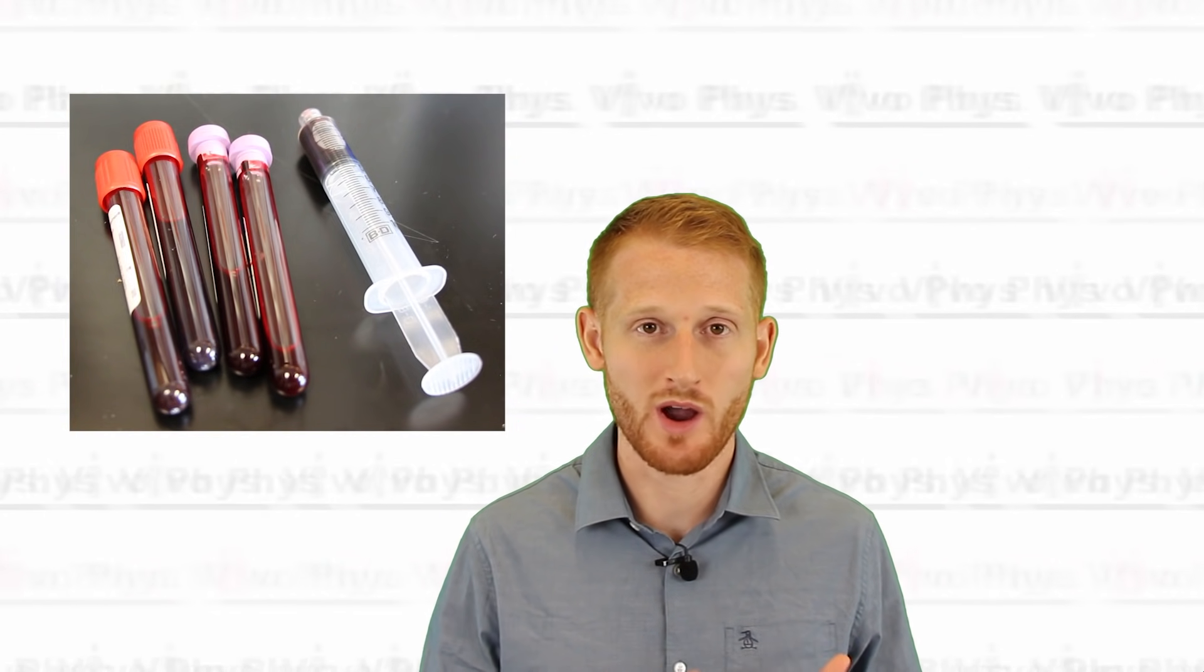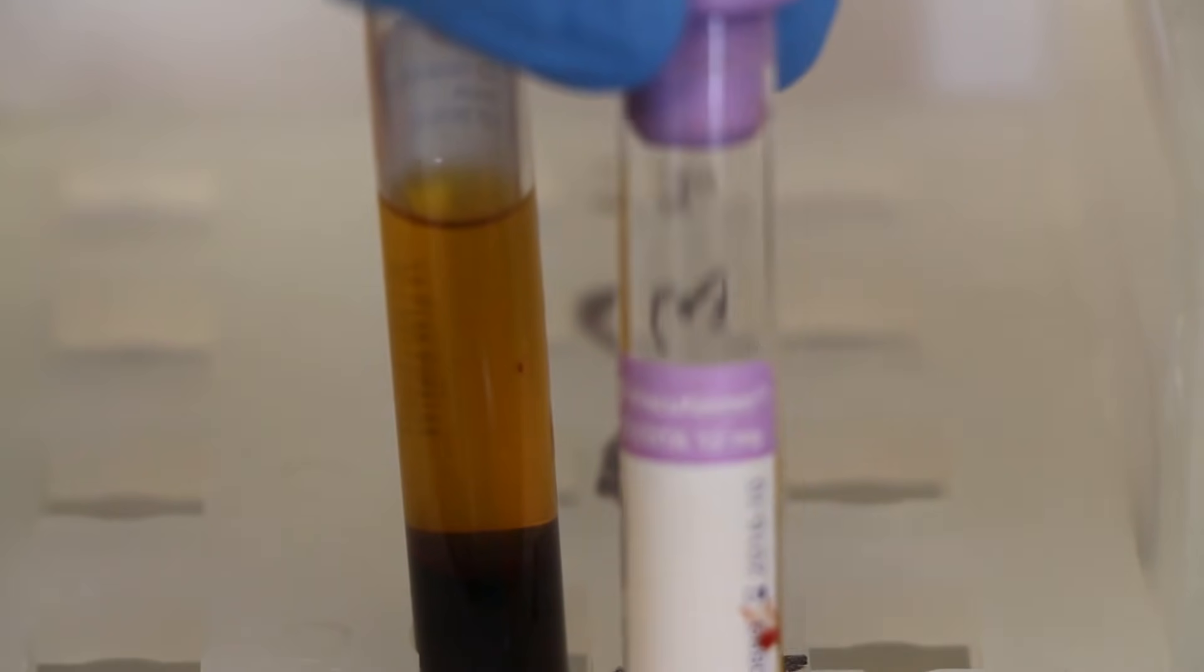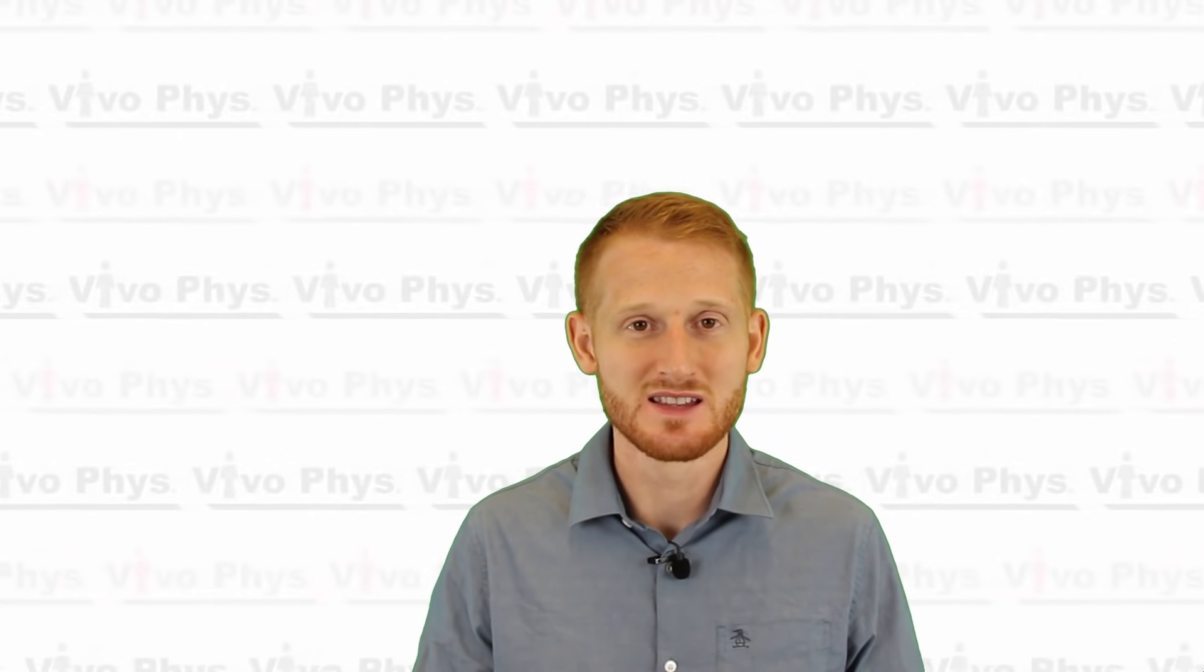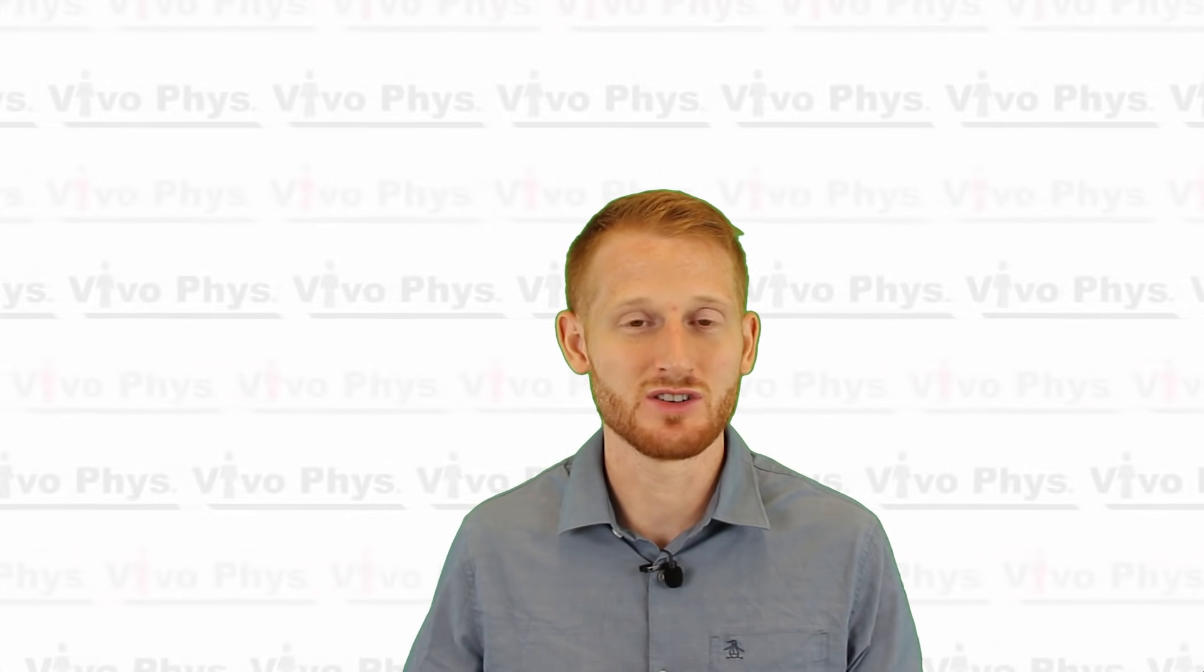The purple top are the EDTA tubes that are going to prevent the blood from coagulating. The red tops are going to be the silicone coated tubes that are going to promote coagulation of that blood. Whether you prevent coagulation or promote coagulation is going to determine whether you get plasma or serum. Plasma is what you get from the purple top tubes where you prevent the coagulation, so it still has platelets in it. Serum is what you're going to get from the red top tubes where you promoted coagulation. Essentially that coagulation is the clotting of those platelets, and so when you spin this down you're going to end up getting just liquid and no platelets inside that liquid.